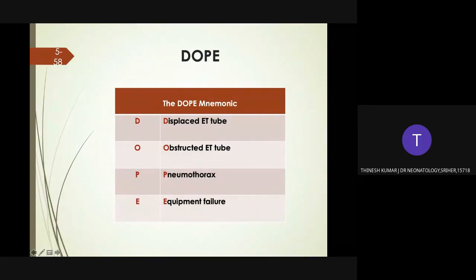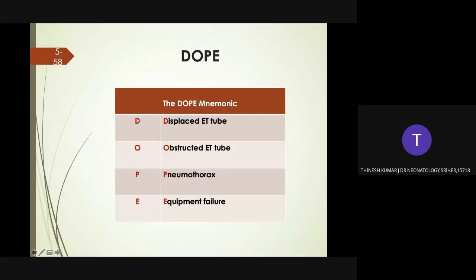What problems should you consider if a baby's condition worsens after endotracheal intubation? Remember the acronym DOPE: D — displaced endotracheal tube, O — obstructed endotracheal tube, P — pneumothorax, E — equipment failure. The ET tube may have been inadvertently advanced too far or pulled back outside the trachea. The tube may be obstructed by blood, meconium, or other thick secretions. The baby may have developed a tension pneumothorax, or the positive pressure ventilation device may have become disconnected, kinked, or developed a leak.